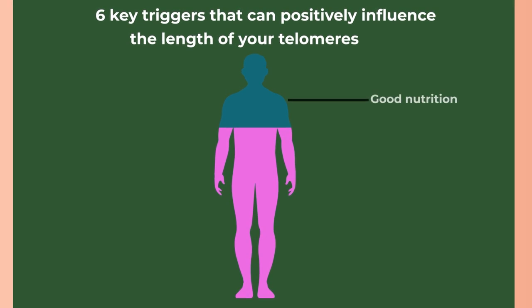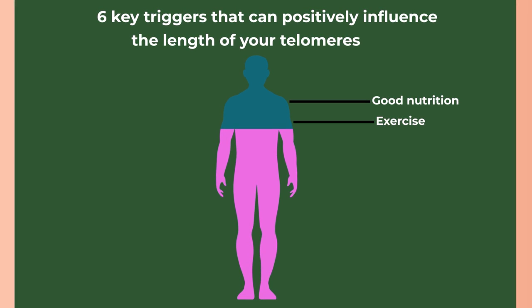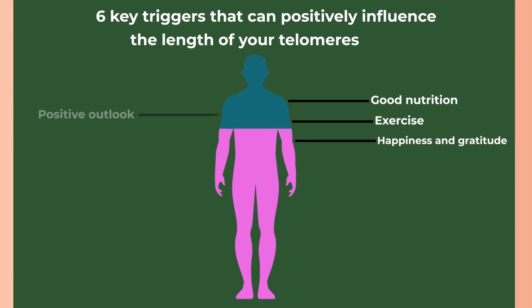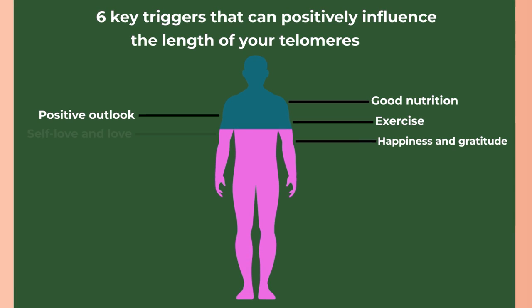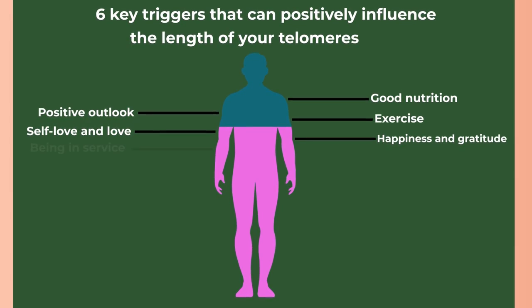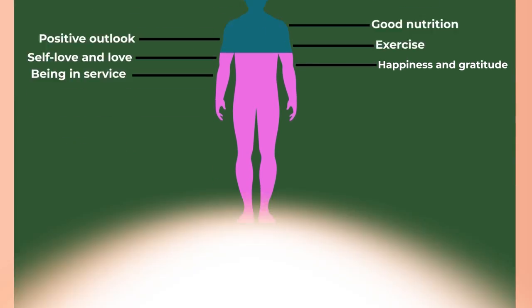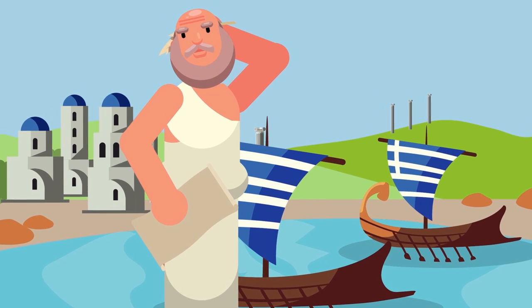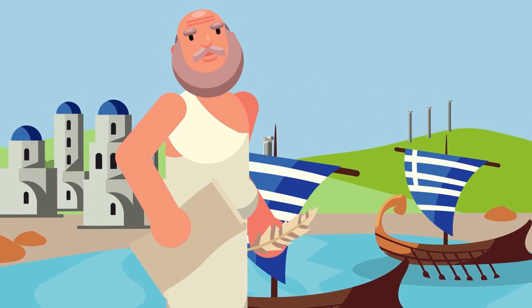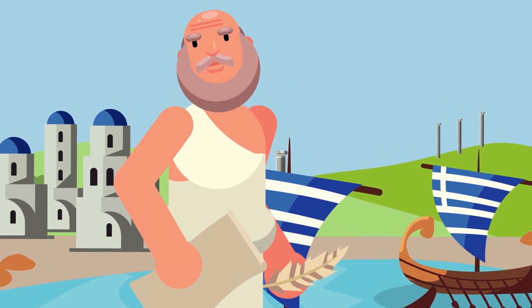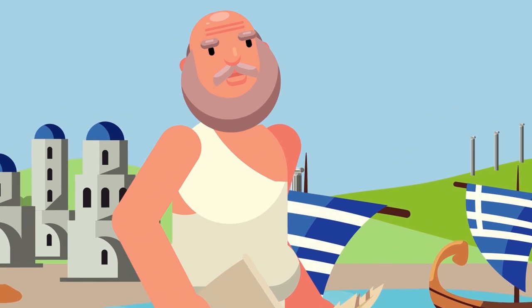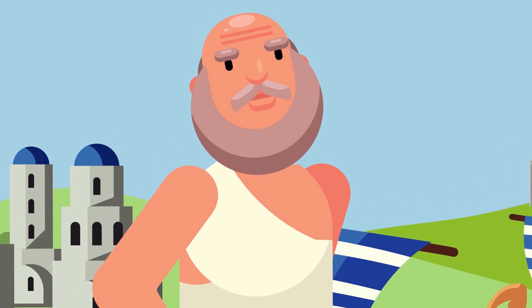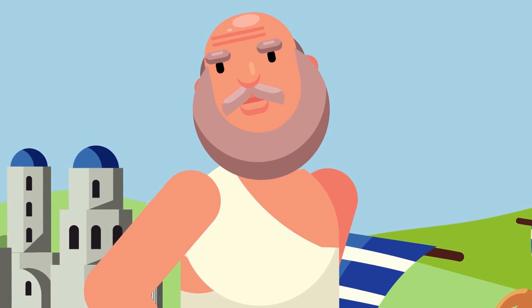And discovered that there are six key triggers that can positively influence the length of your telomeres. These triggers are: 1. Good nutrition 2. Exercise 3. Happiness and gratitude 4. Positive outlook 5. Self-love and love 6. Being in service. We all know that good nutrition and exercise are vitally important.